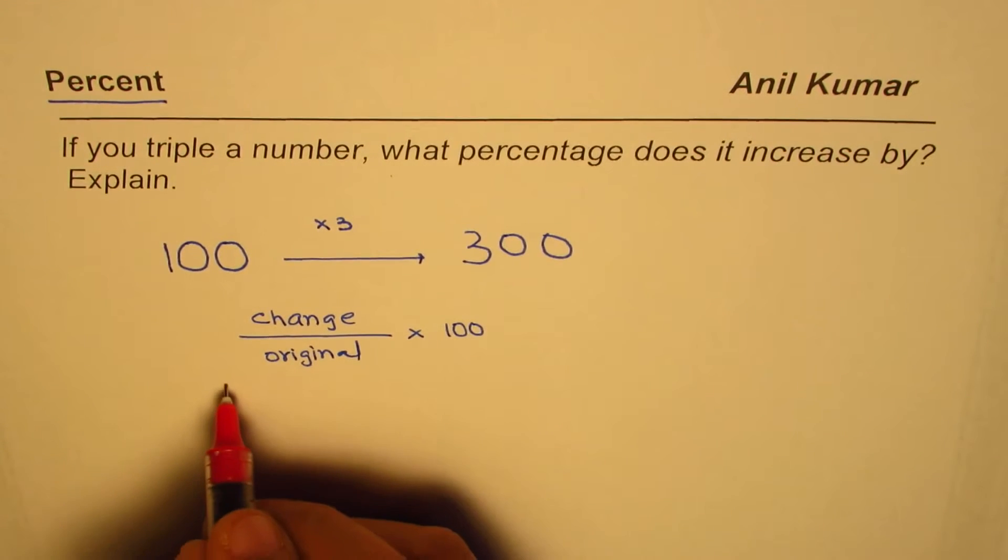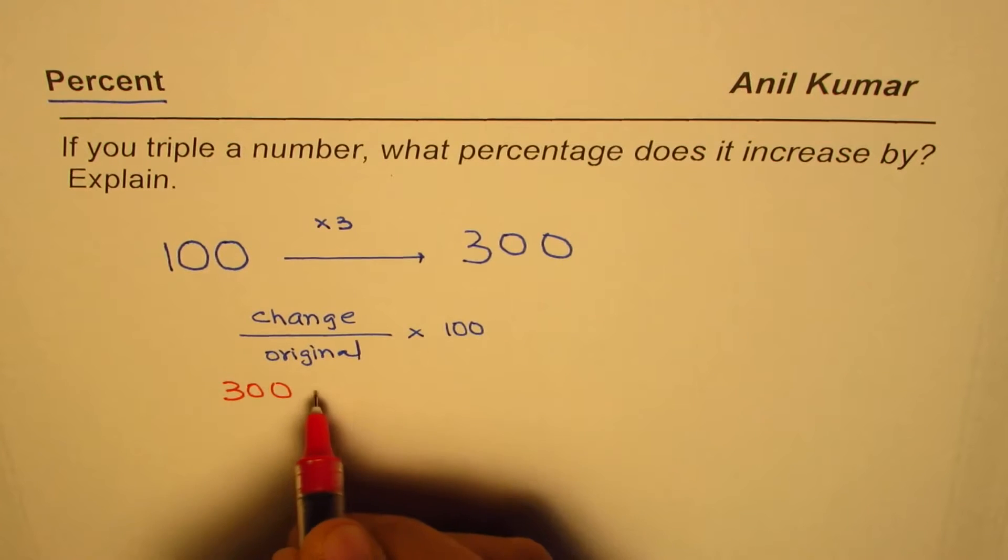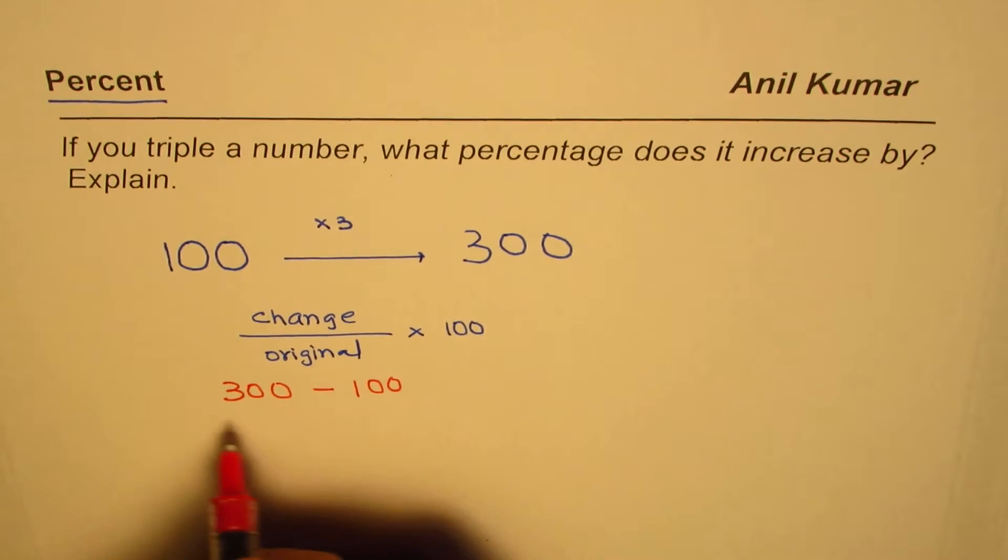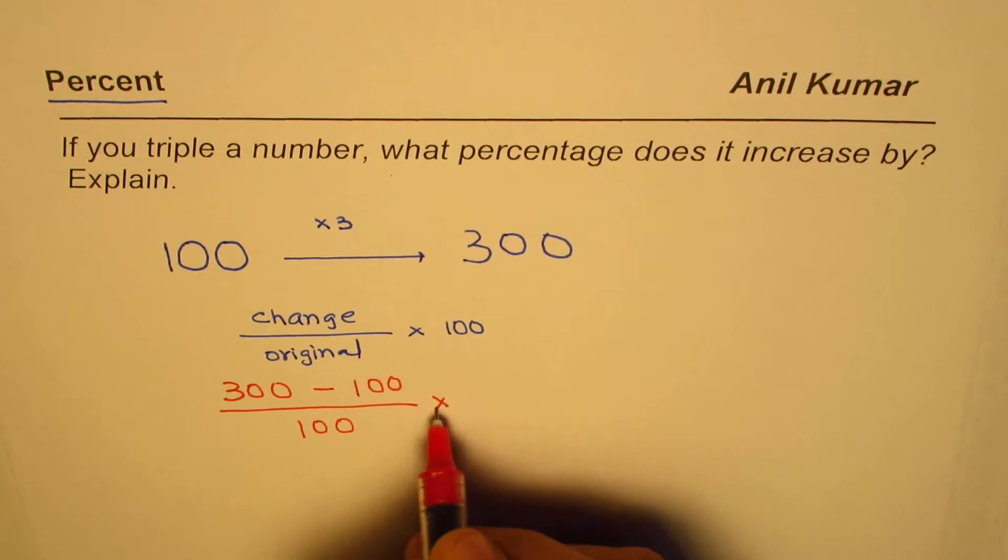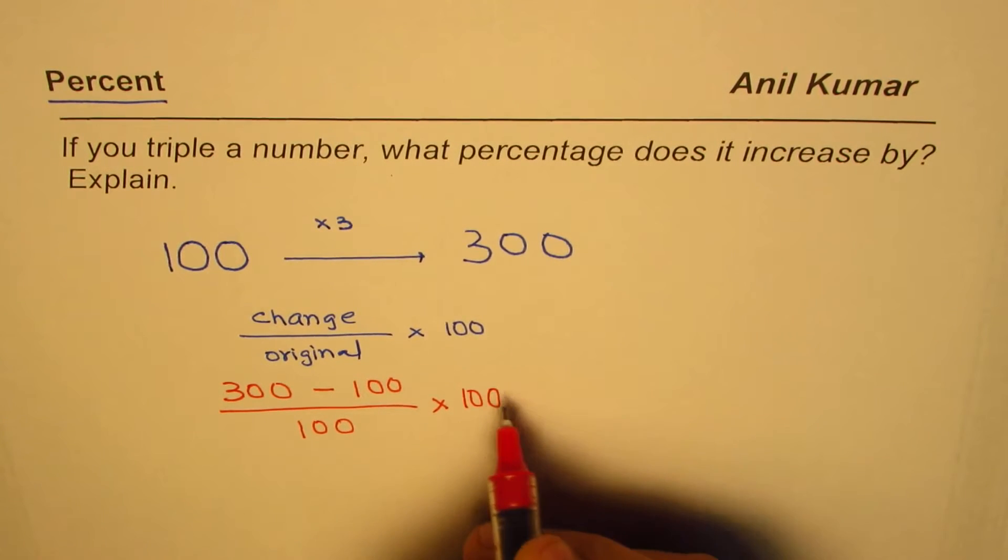What's the change? The change here is 300 minus 100. Original number is 100. So it's easy to calculate times 100.